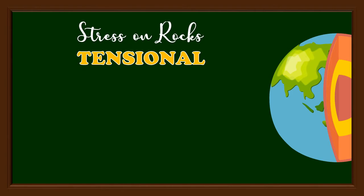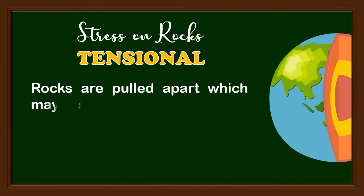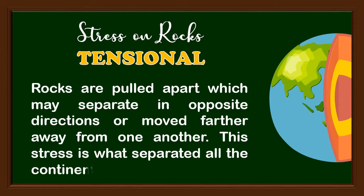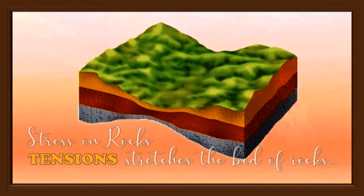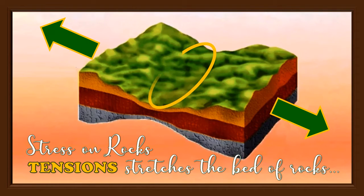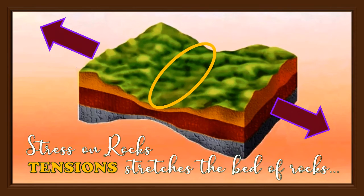The second type is called tensional stress. Rocks are pulled apart, which may separate them in opposite directions or move them farther away from one another. This stress is what separated all the continents in the world. As seen in the picture, tension stretches the bed of rocks, with tension at the center due to the pulling apart of the rocks.